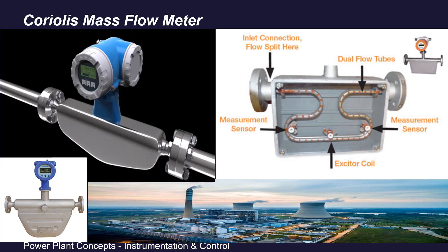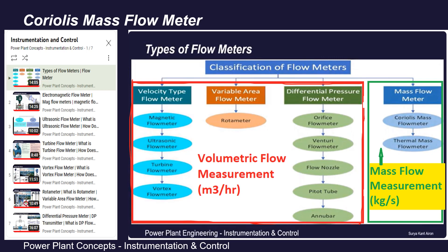Hello friends, a warm welcome to yet another interesting session on instrumentation and control in power plant industries. Our today's topic of discussion is the Coriolis mass flow meter. In all our previous sessions we have discussed volumetric flow meters — whether electromagnetic flow meter, ultrasonic flow meter, turbine type flow meter, vortex rotor meter, orifice, venturi, or pitot tube — all are giving volumetric flow rates.